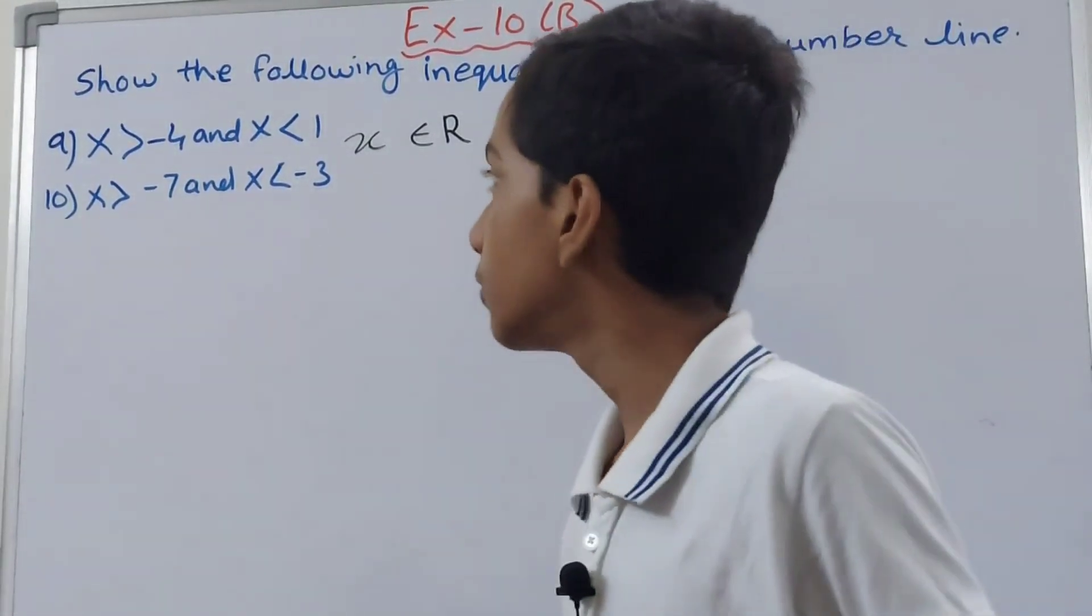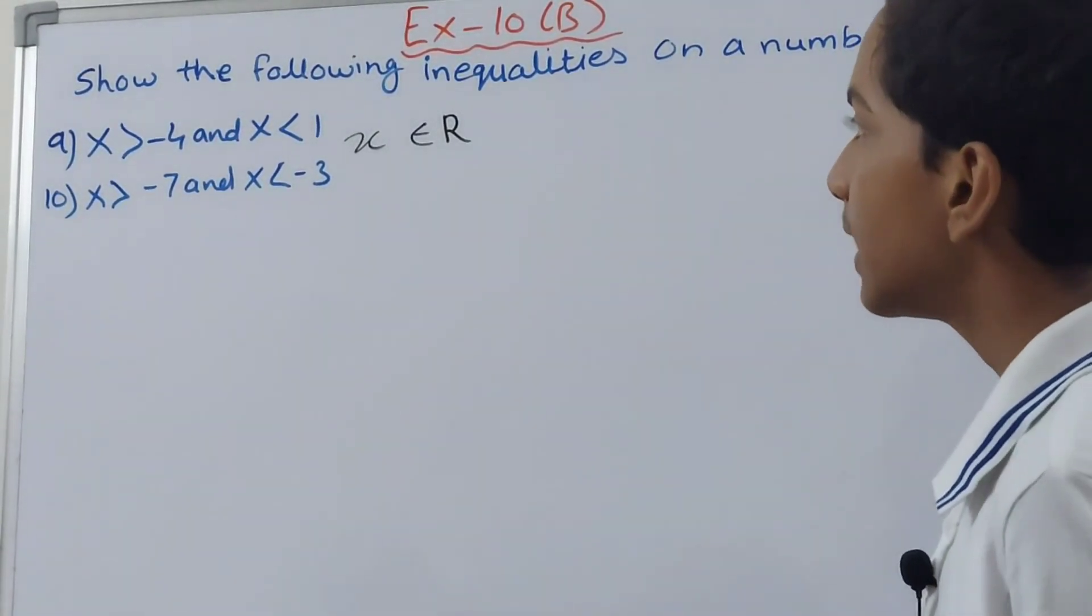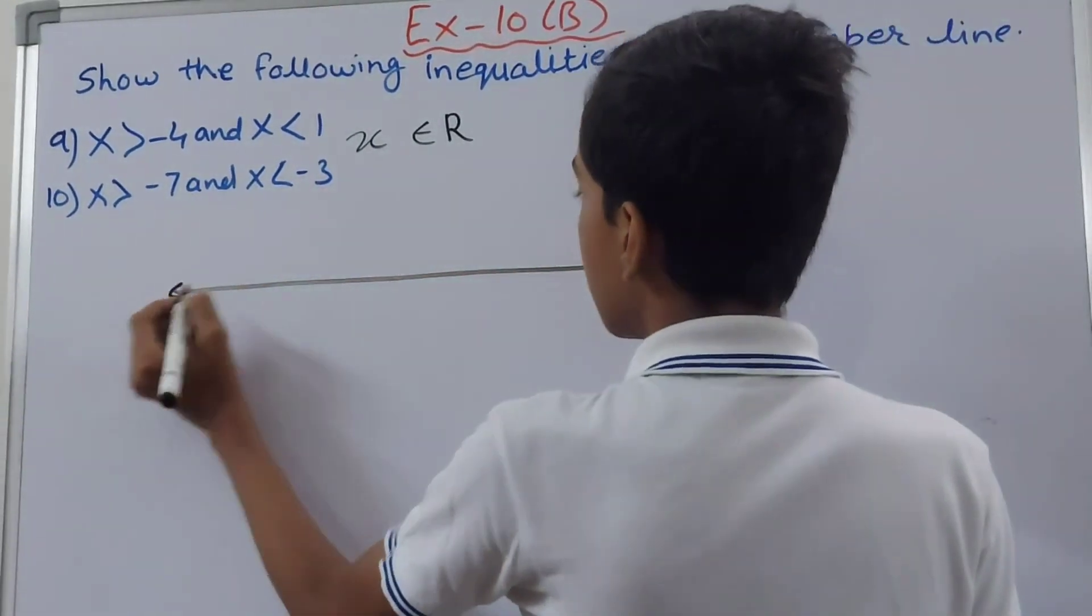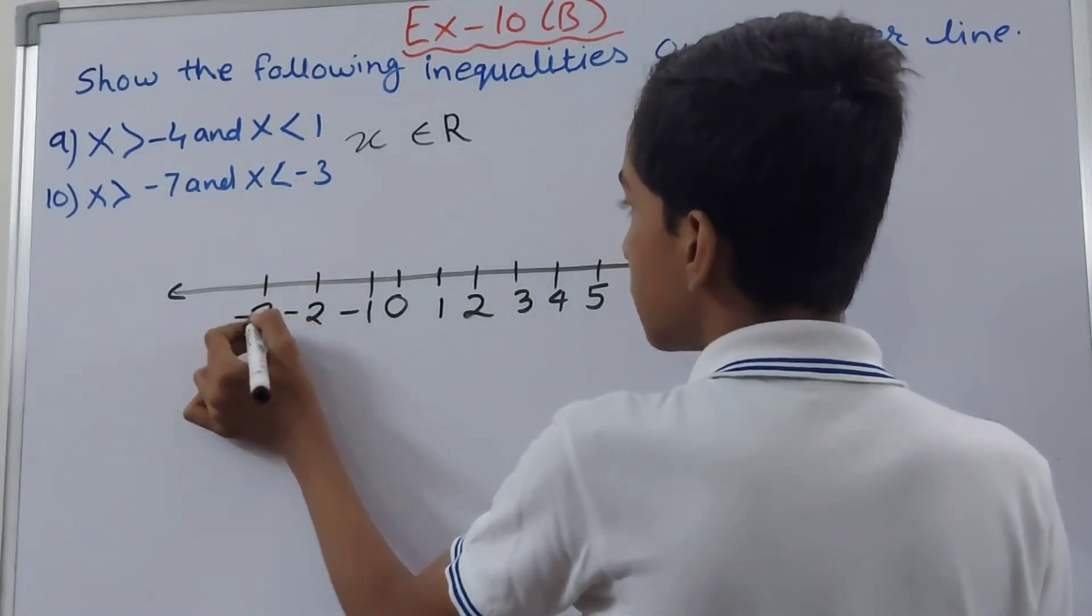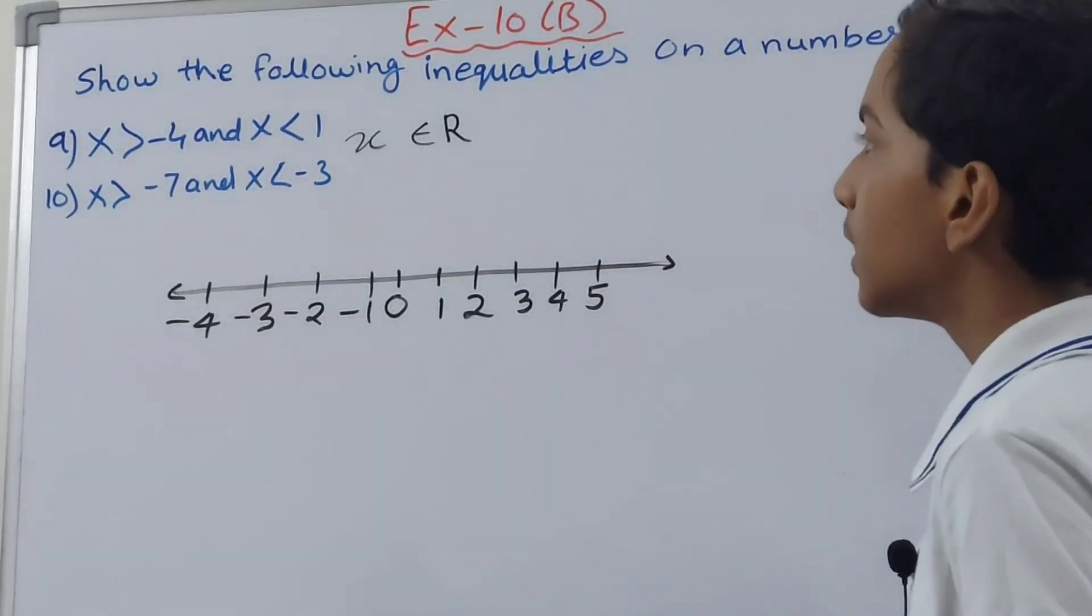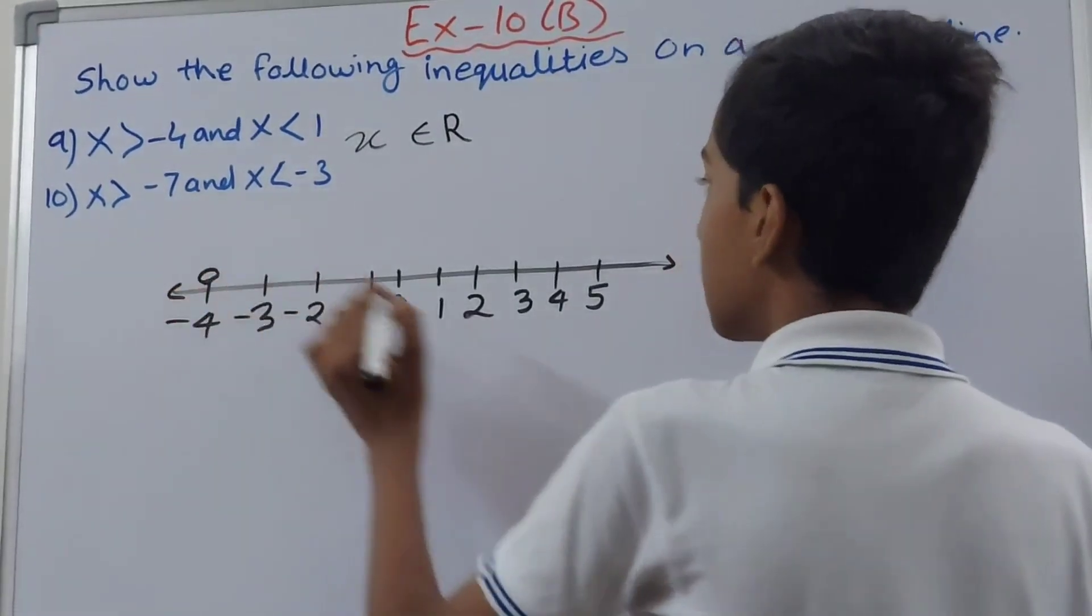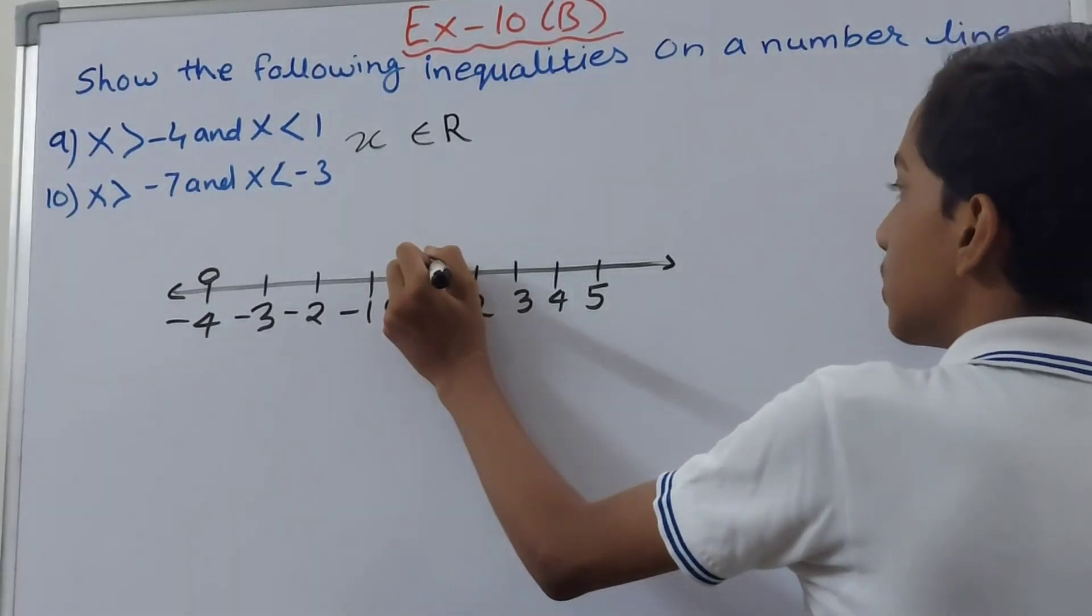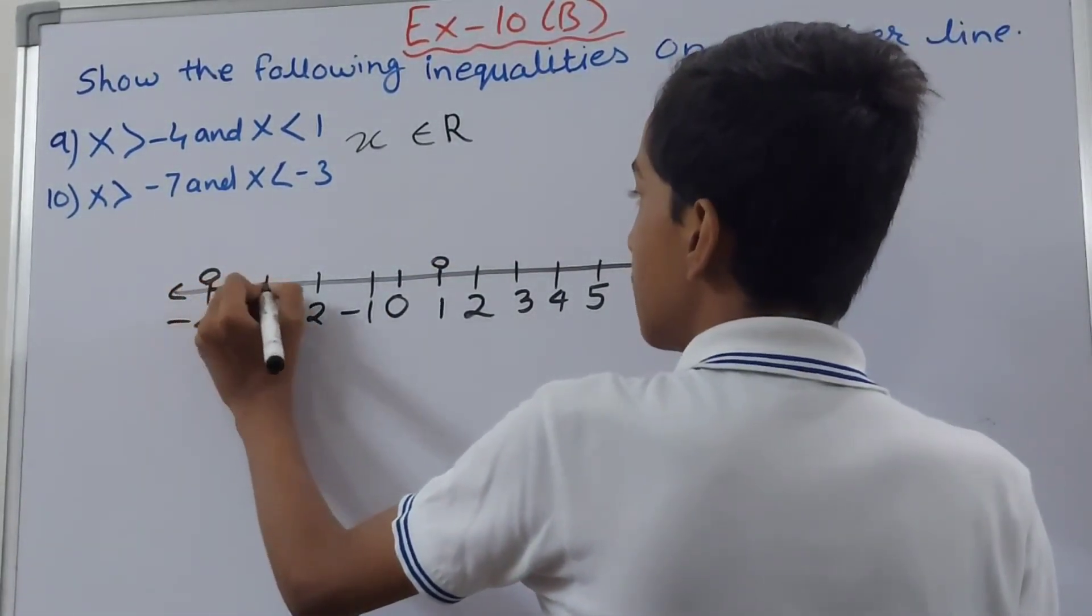Now we move on to the ninth part. Here we have x is greater than minus 4 and x is less than 1. So again, first of all, the number line. Now you see here, the value of x has to be greater than minus 4 and it has to be less than minus 1. So another open circle here, and then we highlight this much area between these two.